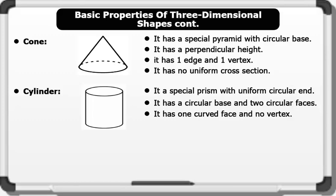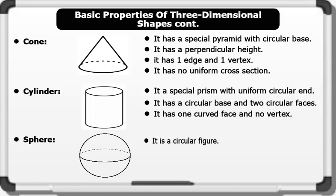The sphere: properties of a sphere include it is a circular figure, it has no vertex, and it has no edges or apex. That's brilliant.